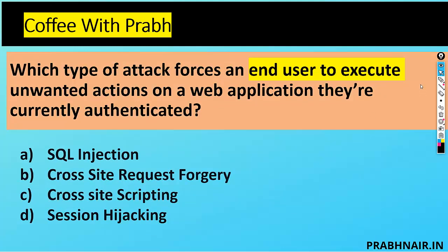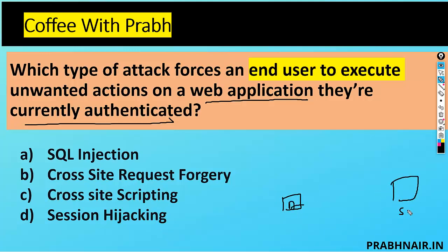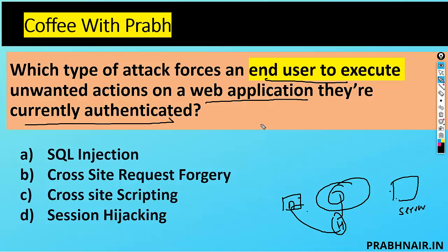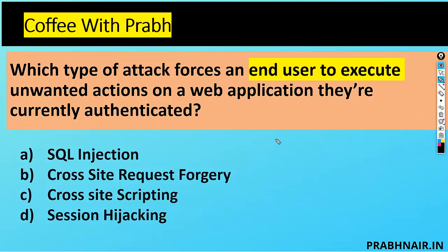Question 1: Which type of attack forces an end user to execute unwanted actions on a web application they are currently authenticated on? Options: A) SQL Injection, B) Cross-Site Request Forgery, C) Cross-Site Scripting, D) Session Hijacking. Session hijacking involves hijacking the communication session; SQL injection penetrates the database. Cross-site scripting injects a script into a website. The question specifically asks about forcing a user to execute actions, so the answer is Cross-Site Request Forgery (B).